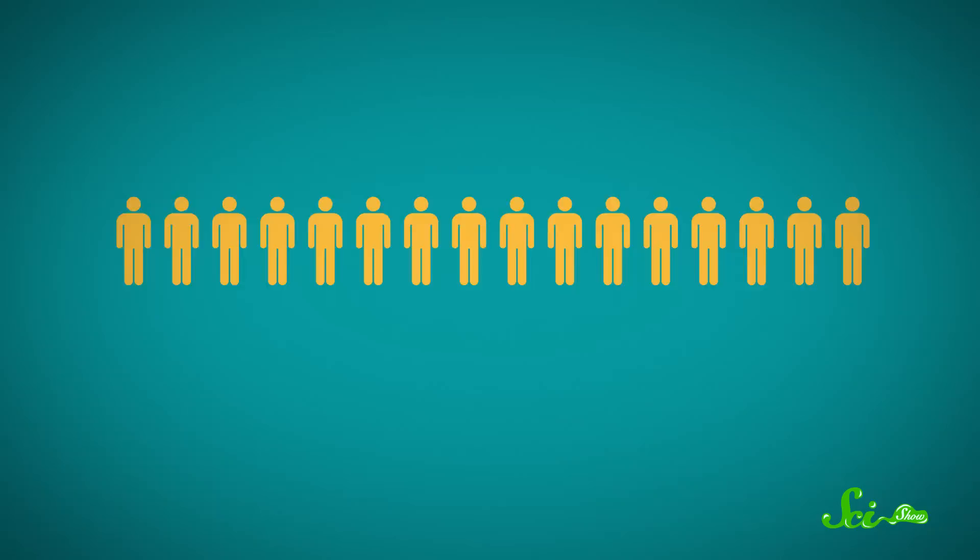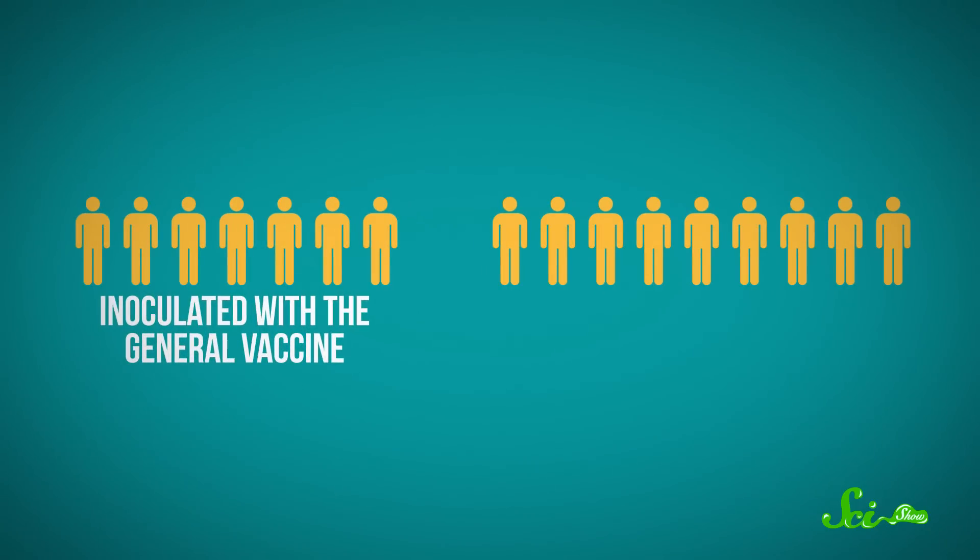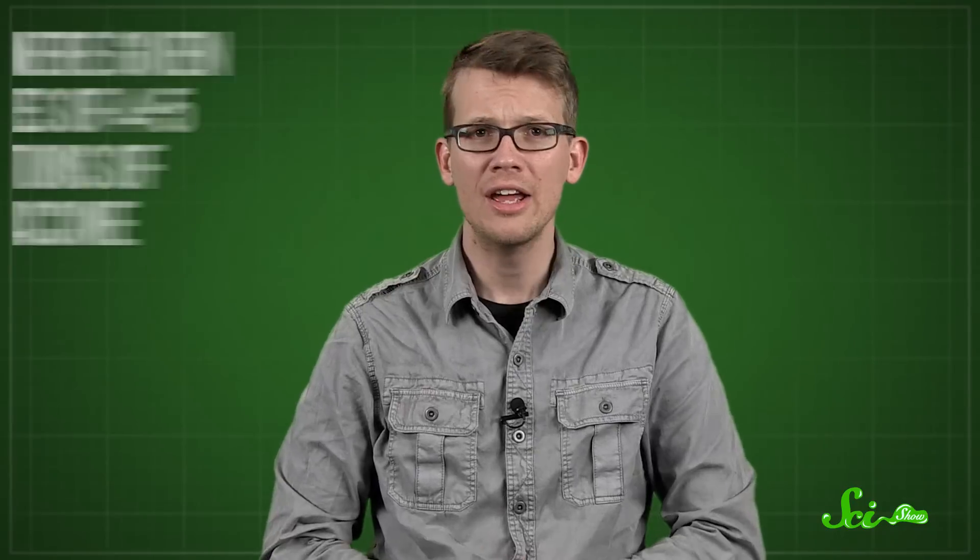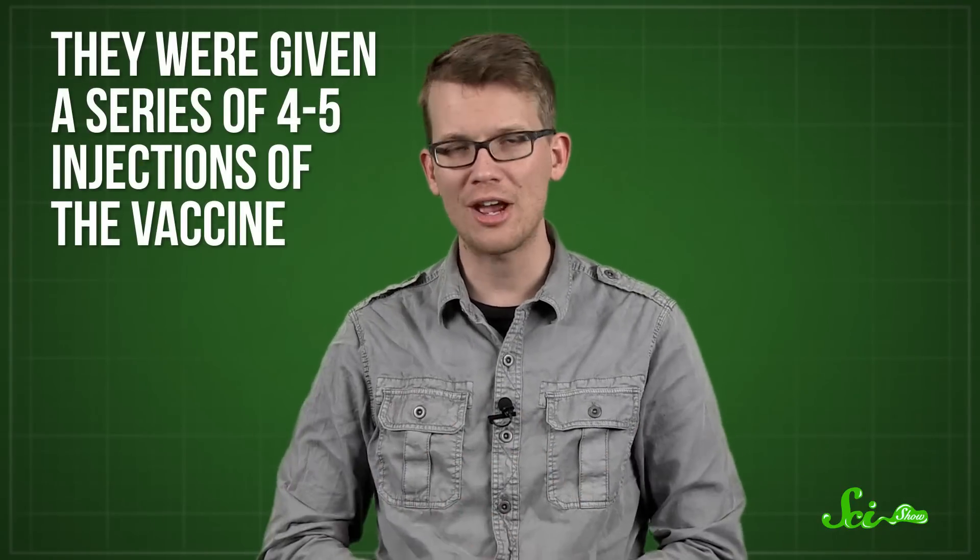They devised a plan wherein over a thousand preschool-aged children would be split into two groups, an experimental group that the lab would inoculate, and a control group that would not be inoculated. The experimental group consisted of children from parents who volunteered to have them vaccinated at local health clinics. They were given a series of four to five injections of the vaccine. A volunteer nurse would then visit the child every three to four months to collect cough plates to see whether or not they had contracted pertussis.